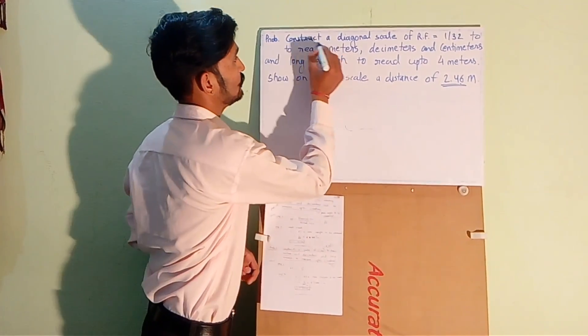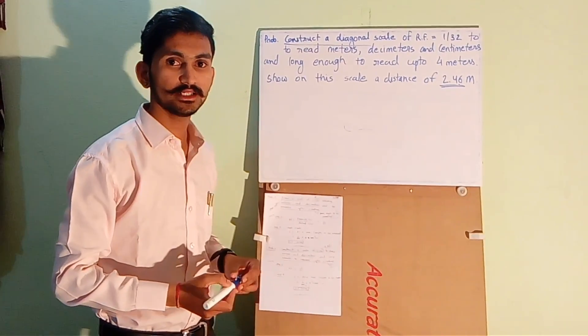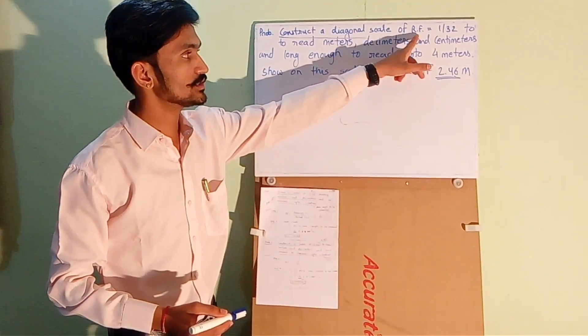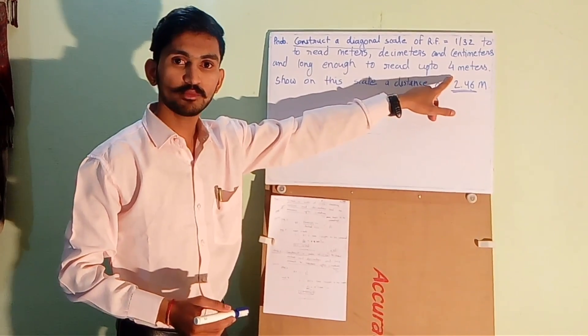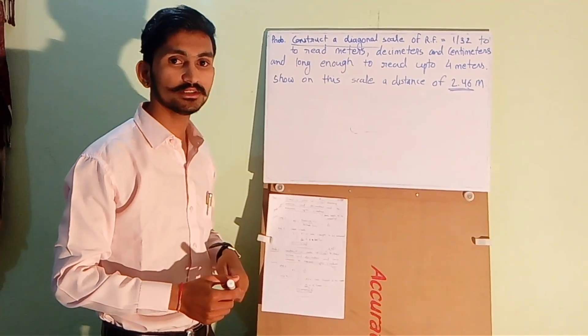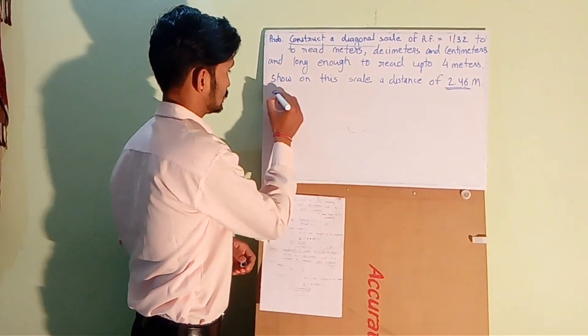We have directly provided in the question that we have to construct a Diagonal Scale. The RF is directly provided in the question, maximum length to be measured is 4 meters. So all the data are provided in the question. So let's start.